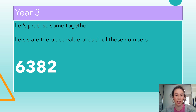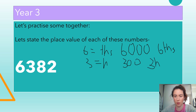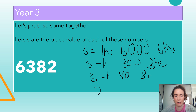Let's practice stating the place value of each digit. We have 6,382. Our six equals thousands, or 6,000. Our three equals hundreds, which is 300 or three hundreds. Our eight equals tens — it's in our tens column, so 80, or eight tens. And two is in our ones column — O for ones, 2, and two ones.